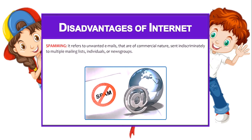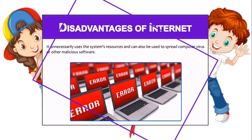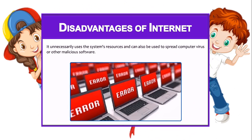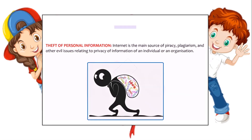Spamming refers to the receiving of unwanted emails that are of commercial nature, which means they appear to come from a business organization for some business reason, but they are sent indiscriminately — meaning randomly — to multiple mailing lists, individuals, or newsgroups. Once they are in your system, they use the system's resources such as memory and can also be used to spread computer viruses or other malicious software, which means software that intends to harm your computer system.